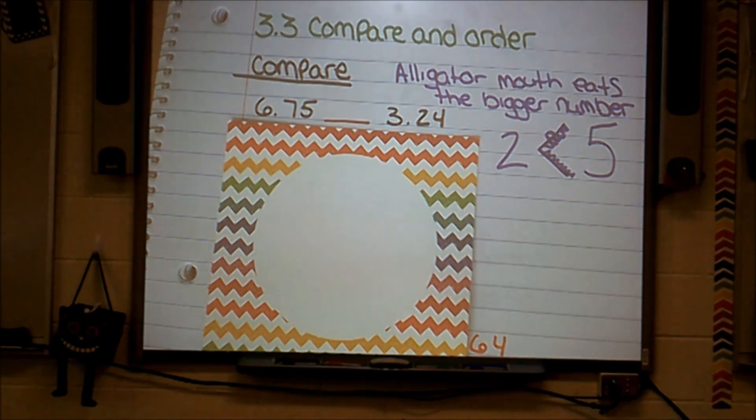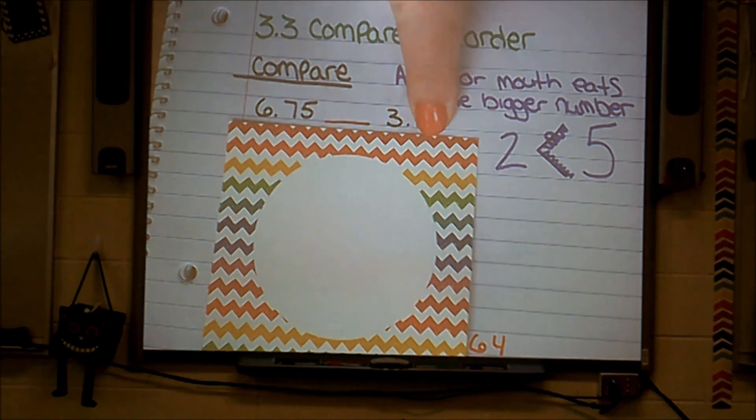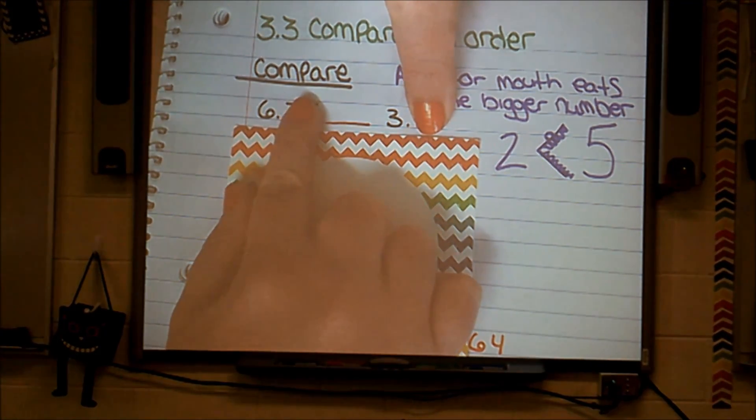Now just as we did in 1st and 2nd grade when we were comparing whole numbers, we start with the digit in the largest place value and compare those first. So in this case, I'm going to be looking at my 3 and my 6. And I'm going to say, which number is bigger? Well, they're both in the 1's place, so that doesn't help me.